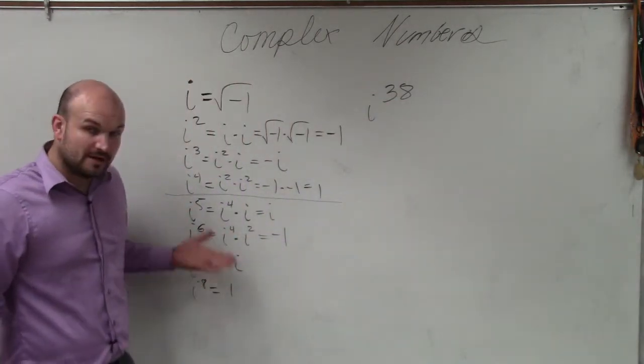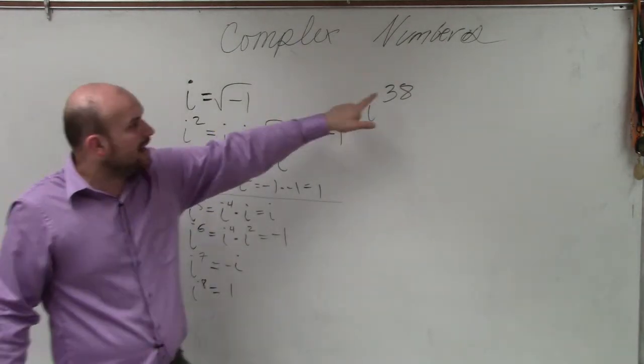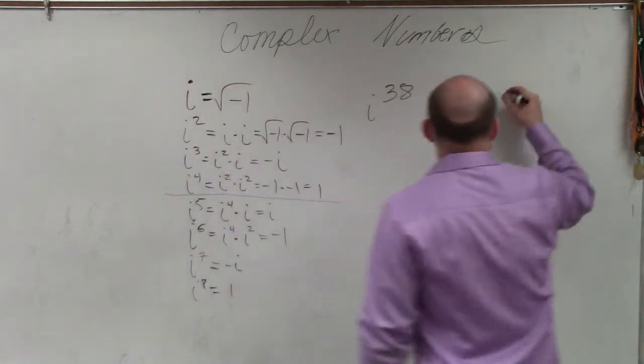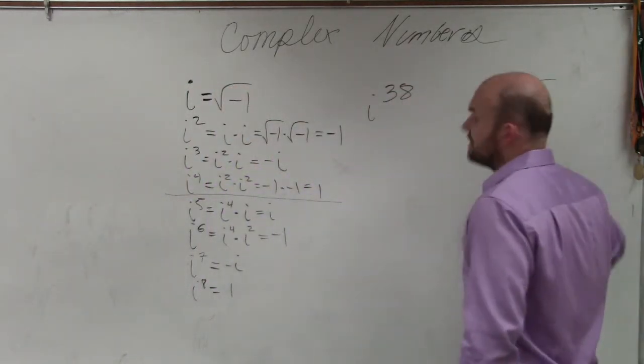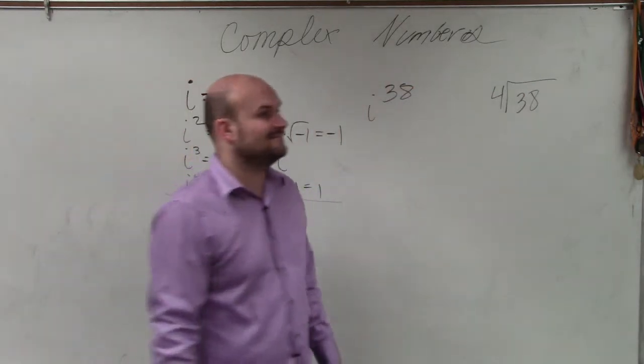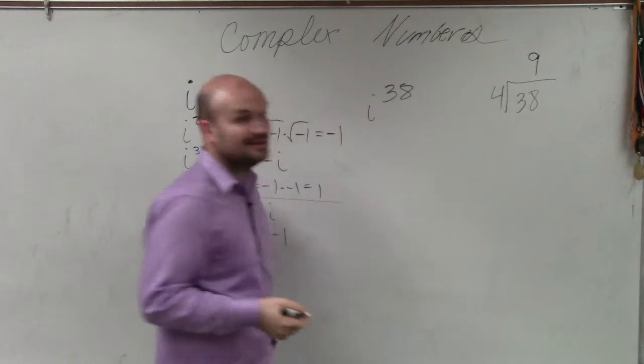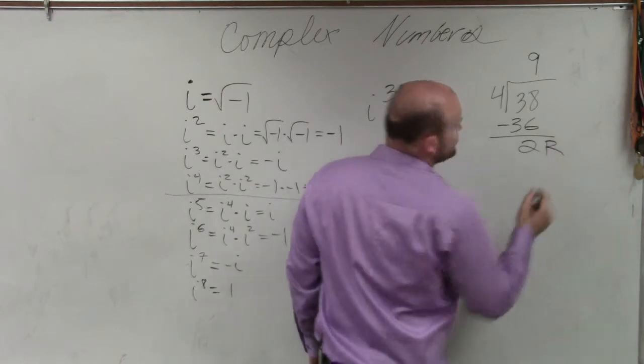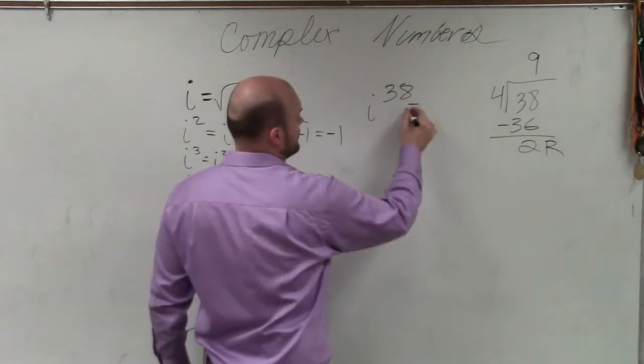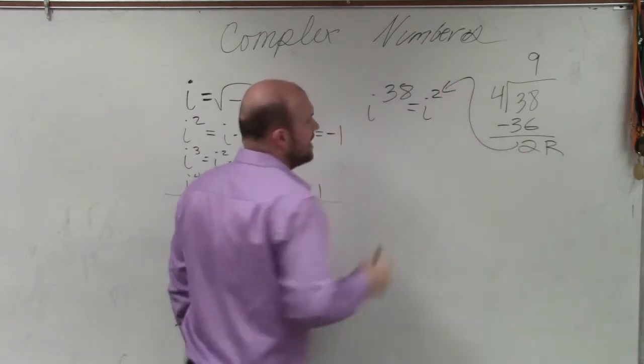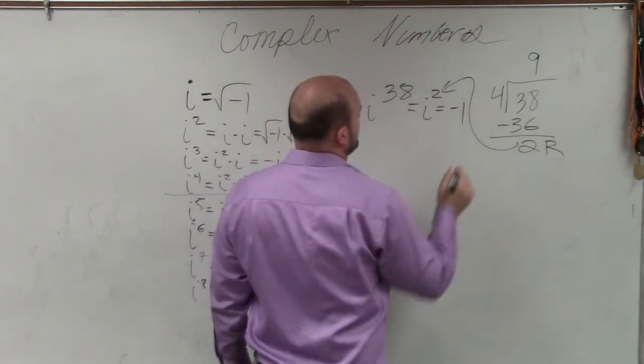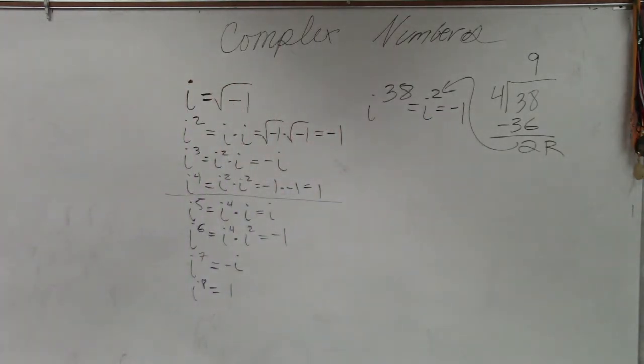So after i to the 4th, it repeats itself. So what I want to do is say, well, how many repetitions of 4 is there going to be when I raise it to the 38th power? So basically, what I'm going to do is do 4 divide into 38. And 4 divides into 38, 9 times. 9 times 4 is 36. Subtract, the remainder is 2. So the remainder is going to be what the power is. So i squared is equal to negative 1.